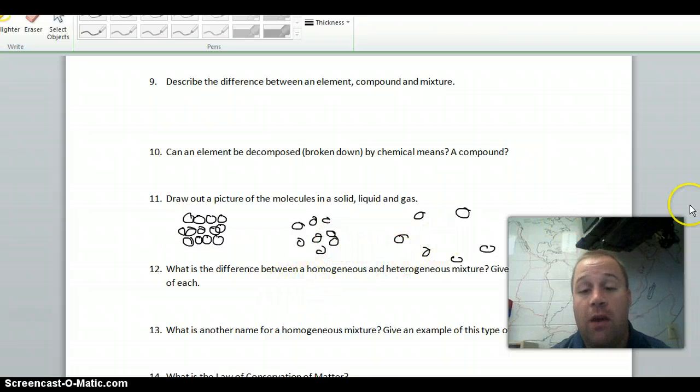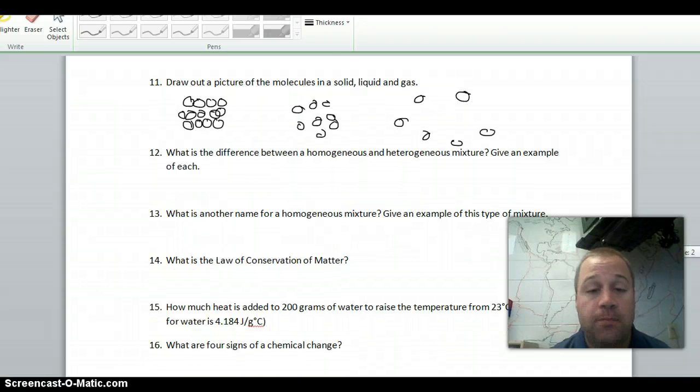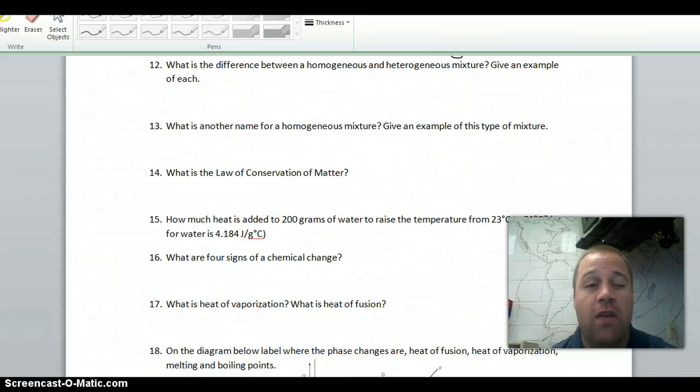What is the difference between a homogeneous and heterogeneous mixture? And give an example. Homogeneous mixture is the same throughout. It's also called a solution. Think about Kool-Aid. You don't see sugar in water. You see one thing, which is Kool-Aid. A heterogeneous mixture is something like chicken noodle soup. You can see all the different parts when you look at it. Homogeneous will look the same throughout. Heterogeneous will look different. Number 13, another name for a homogeneous mixture is a solution. That would be Kool-Aid, salt water, that kind of thing.